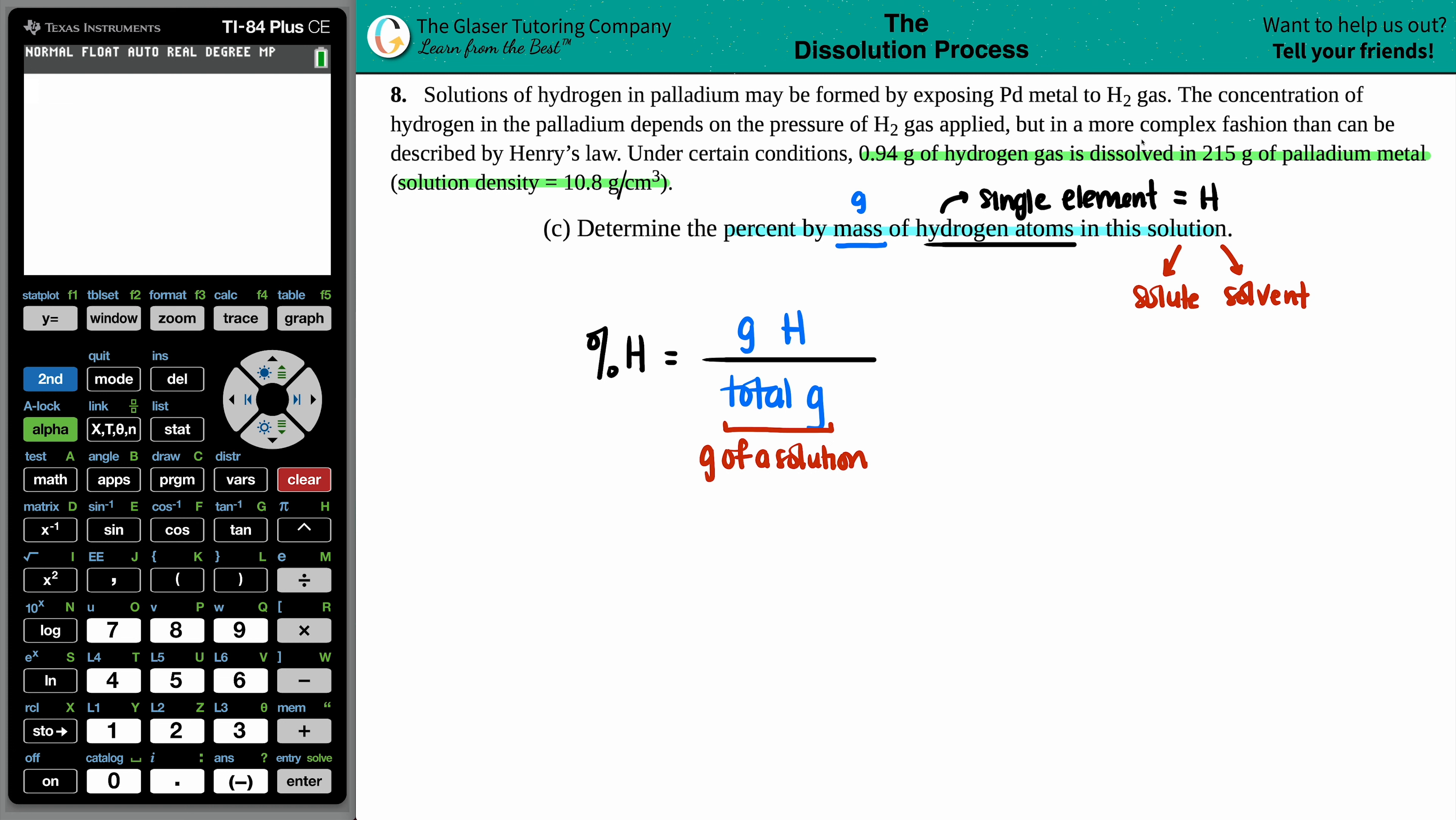So you got three S words here. And in this case, you have 0.94 grams of the hydrogen gas being dissolved into 215 grams of the palladium metal. The total grams would be the addition of these two pieces. So in this case, the grams of the total solution would be the grams of the hydrogen gas, which is H2. Now, I have to put a 2 here because hydrogen is a diatomic. As a molecule, hydrogen is one of your diatomics, so it's got to be H2.